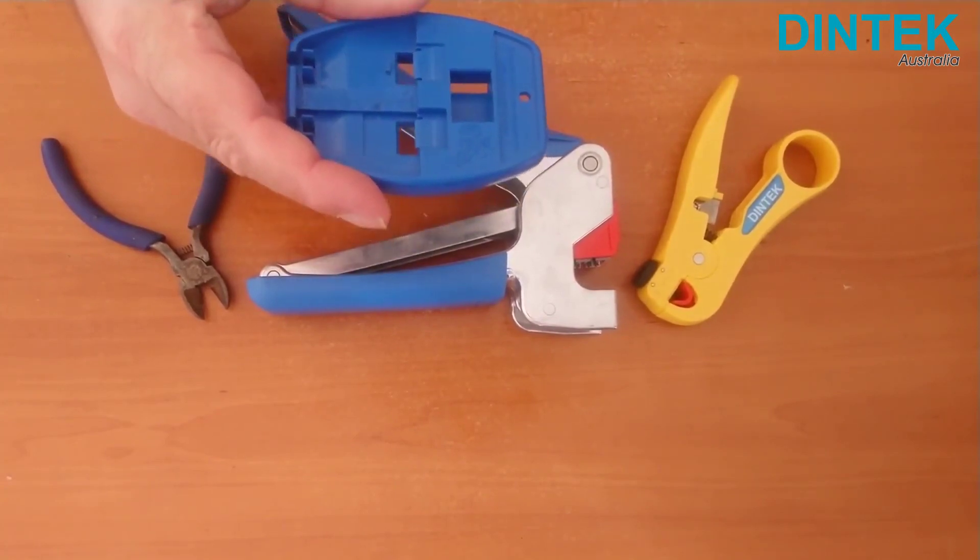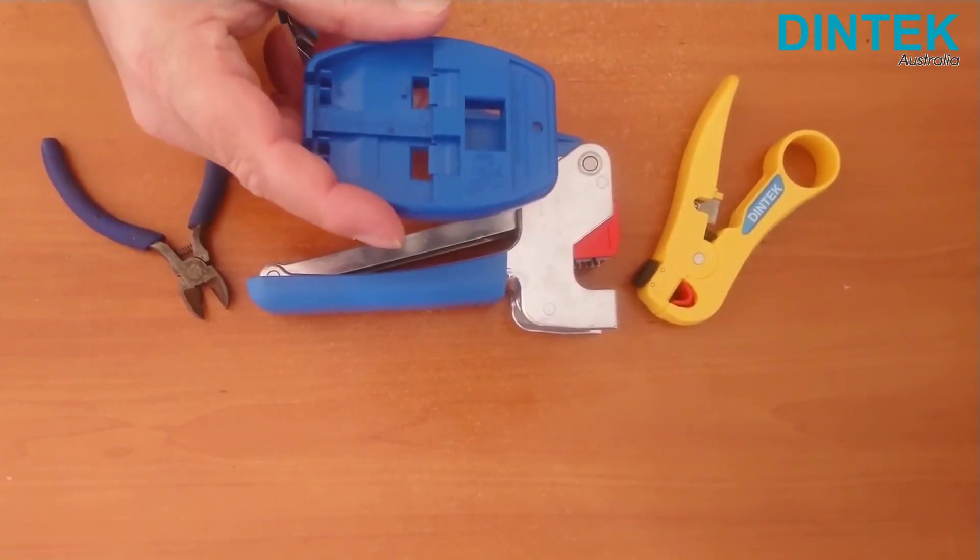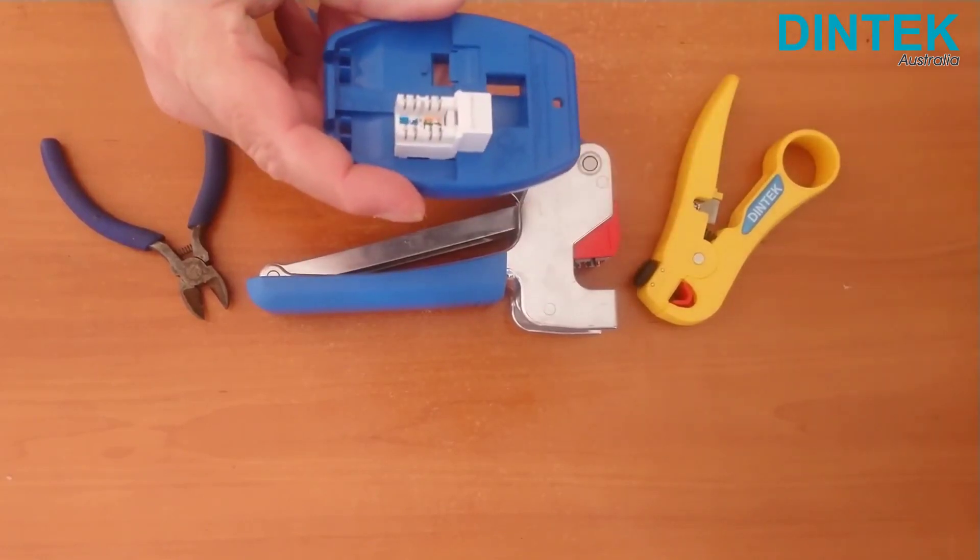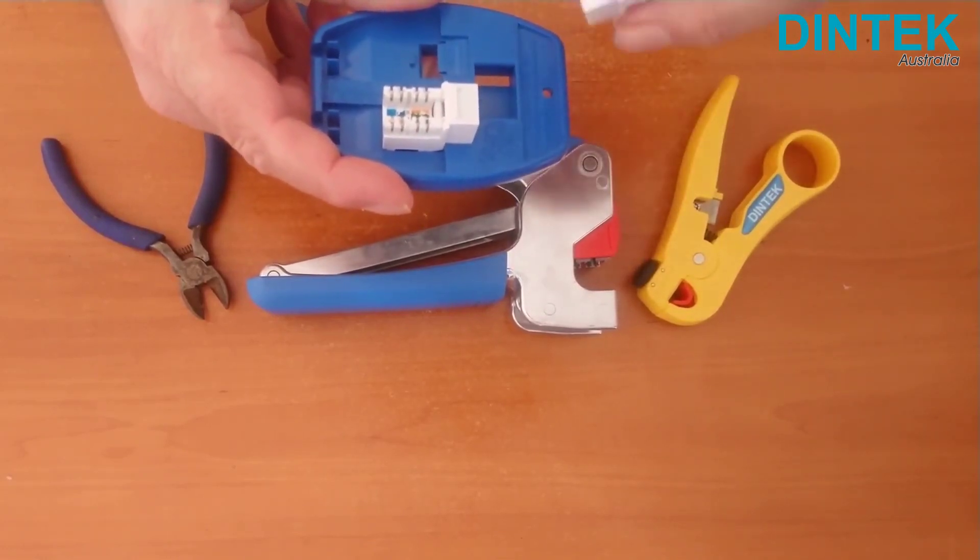The working base is a rather neat little device to hold a keystone jack in place while you're working on it. It has two slots for horizontal jacks and one for vertical jacks.